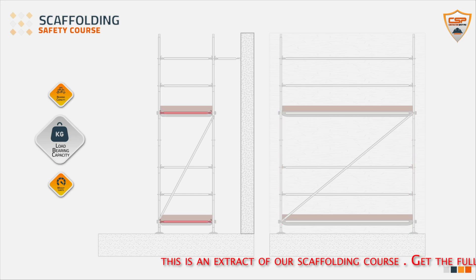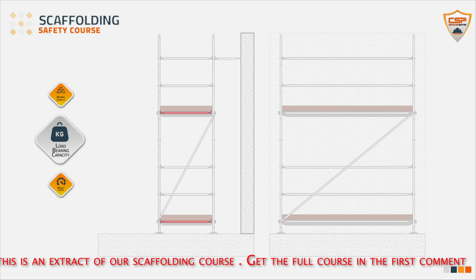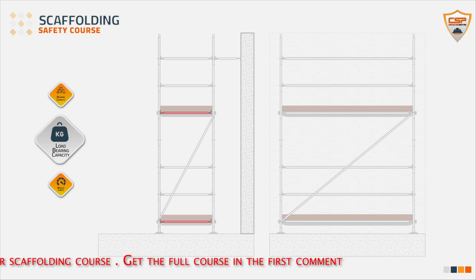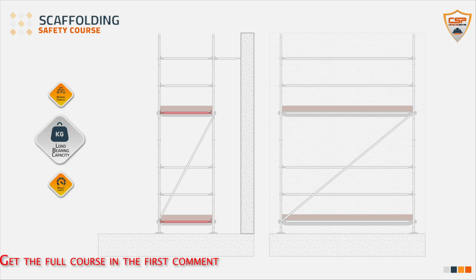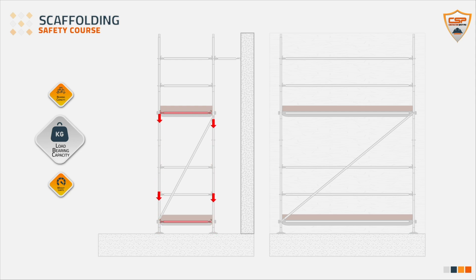Transoms — cross braces. Transoms are horizontal tubes that run perpendicular to the building facade, typically with an outer diameter of 48.3 mm and a wall thickness of 3.2 mm. They rest on the ledgers and support the scaffold planks or decking. Transoms are essential for supporting the working platforms, transferring the load from the platforms to the ledgers and standards, ensuring that the weight of workers and materials is evenly distributed across the scaffold structure.